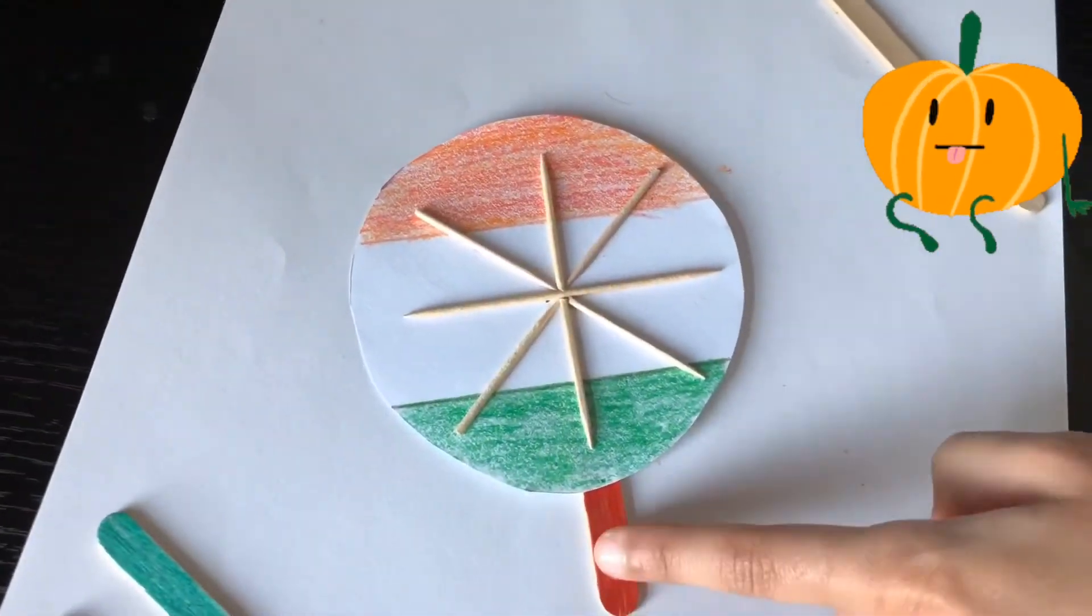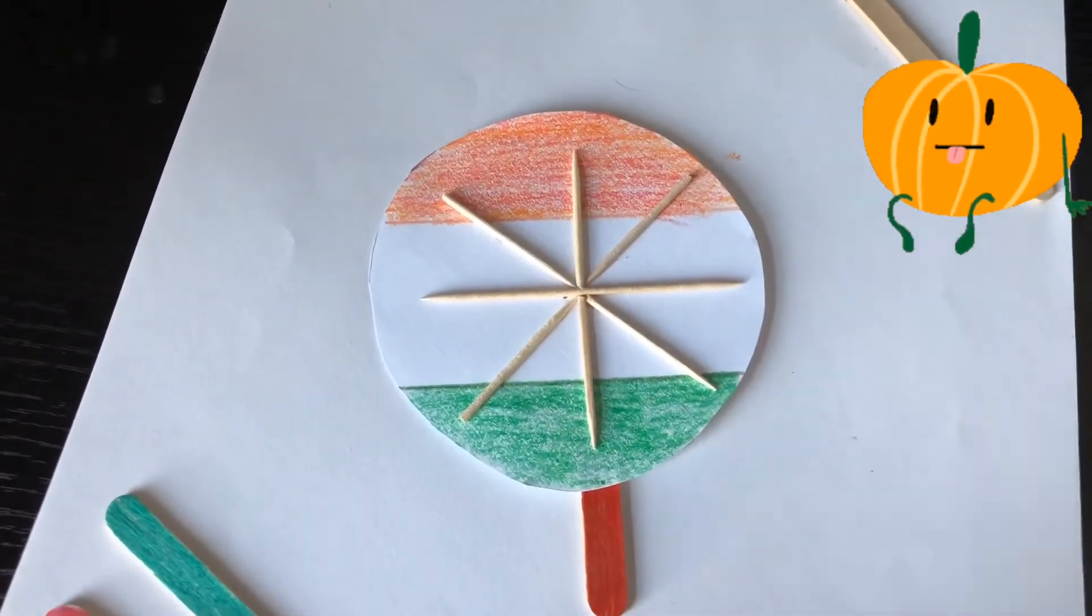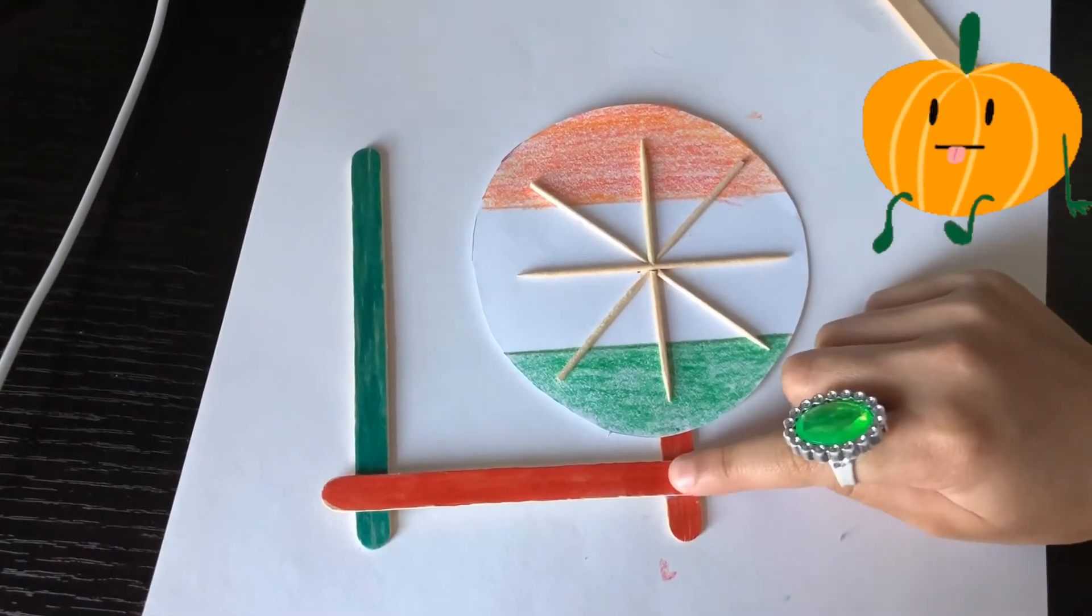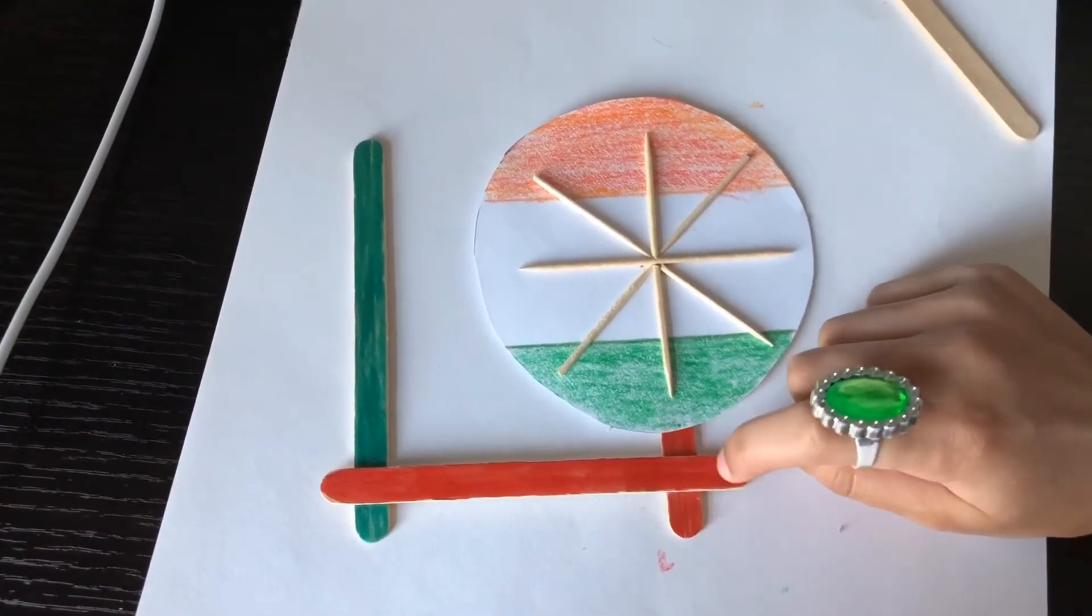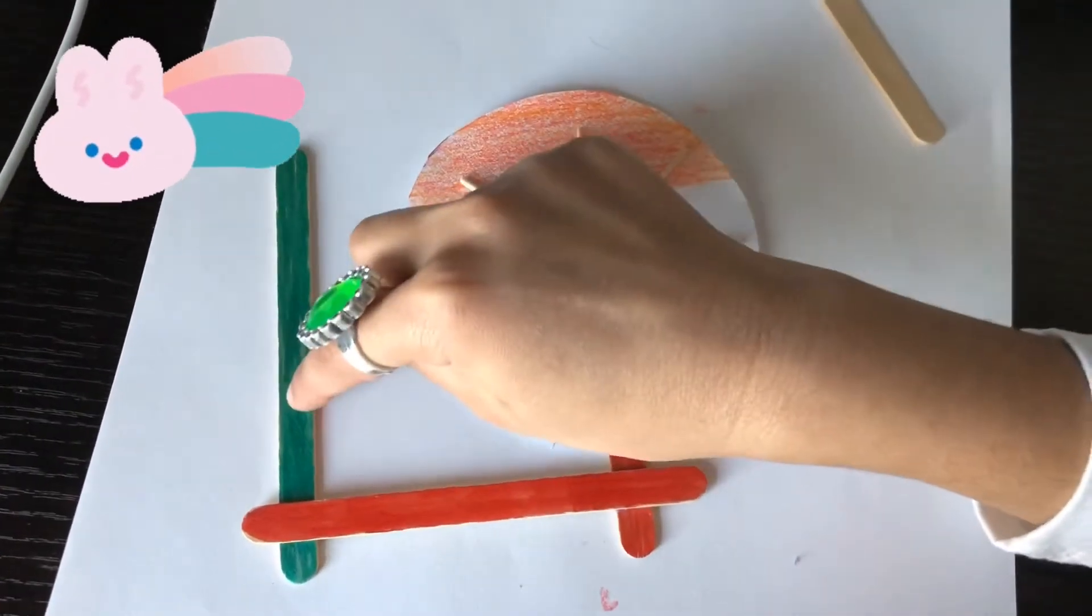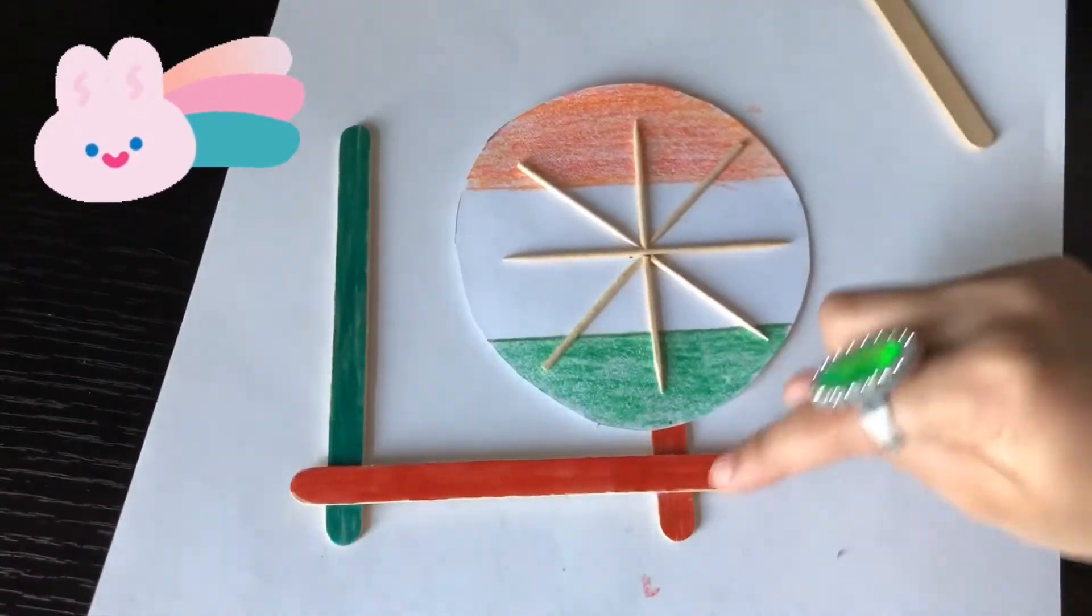So now you need to stick this to a popsicle stick and color it at the bottom. Then we glue another popsicle stick to the popsicle stick we already added. And then again we do the same thing but with this part not this one.